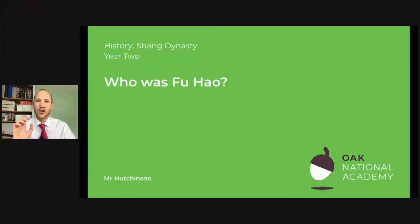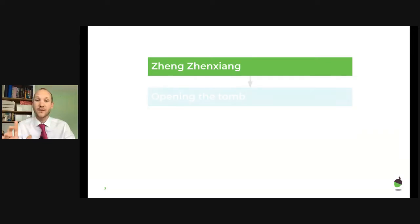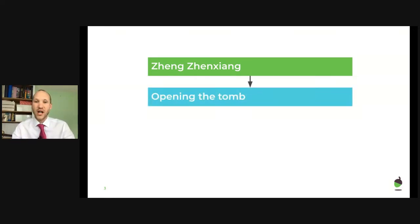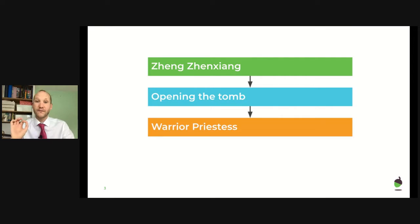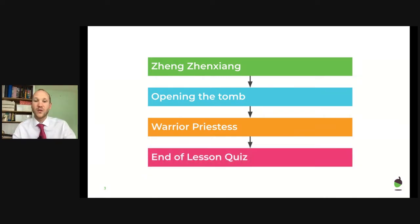Today's lesson title is 'Who Was Fu Hao?' This is what the lesson structure is going to look like. First, we're going to learn about Zheng Zheng Chang. Then we're going to find out how Zheng Zheng Chang opened the tomb of Fu Hao so that we could discover all about this amazing warrior princess. We're going to learn about Fu Hao's life — how she was a warrior, a general, a priestess, just the most interesting life. And we'll have our end of lesson quiz to see if you can remember all of those key facts and have them locked into your brain.